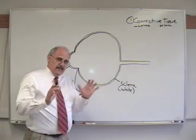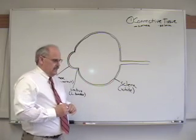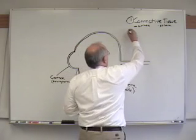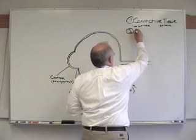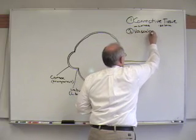The next layer in the eye, the next layer in, is a vascular layer. So, it's vascular tissue.